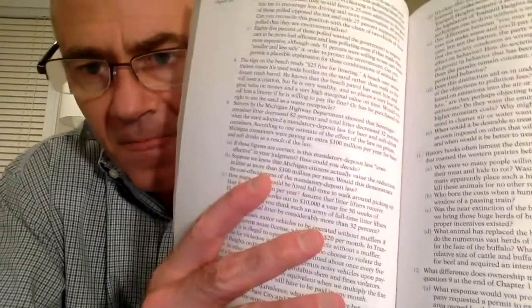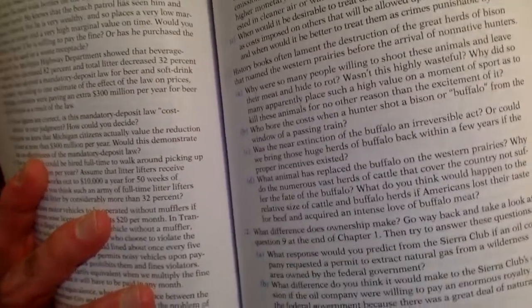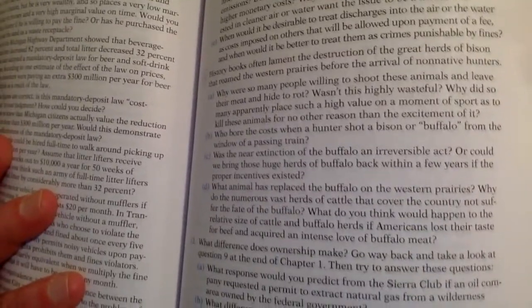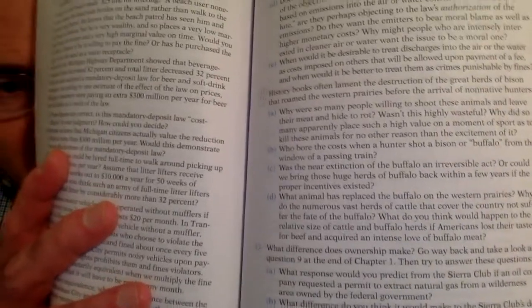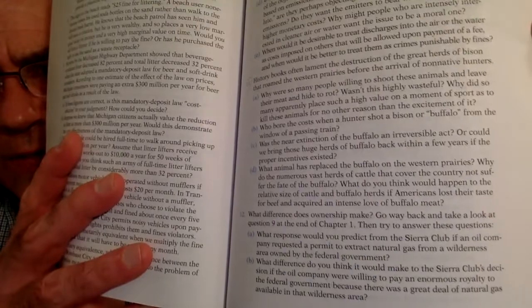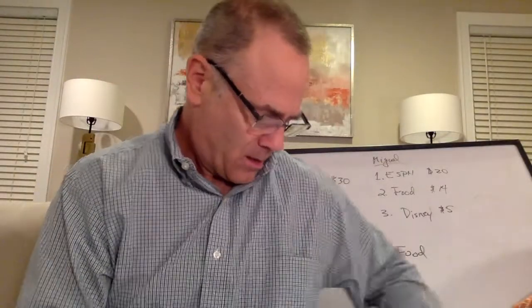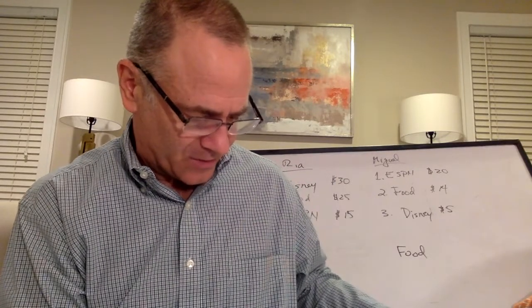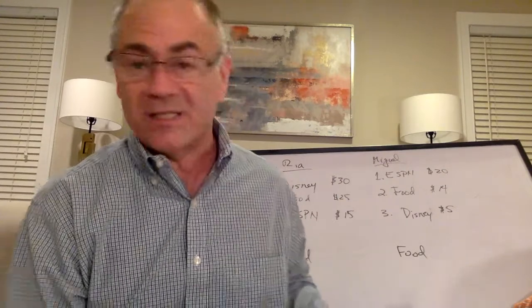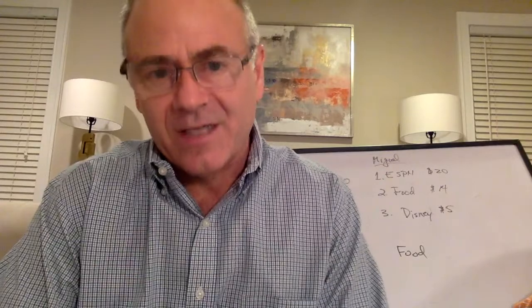Number 11. Historians often lament the destruction of the great herds of bison that roamed the western prairies before the arrival of non-native hunters. Part A: Why were so many people willing to shoot these animals and leave their meat and hide to rot? Wasn't this highly wasteful? The answer is that no one had property rights — this is part of the Coase Theorem: when property rights aren't assigned, you get problems.